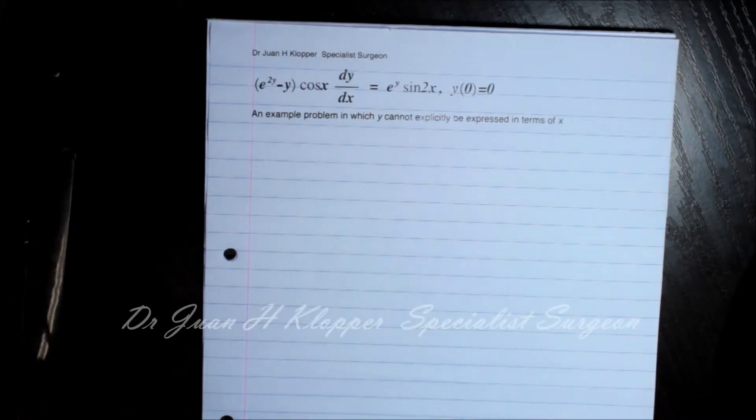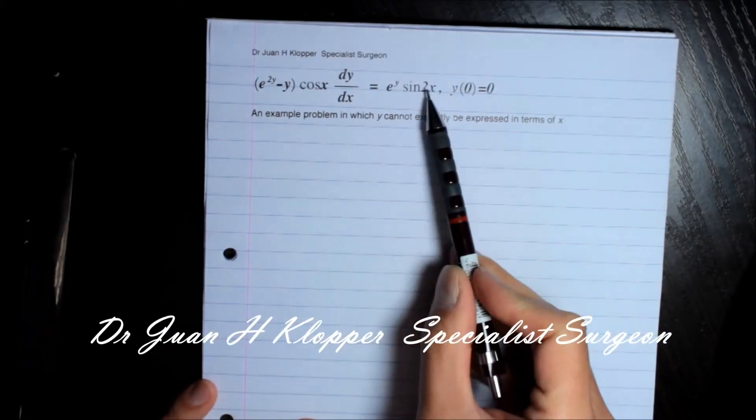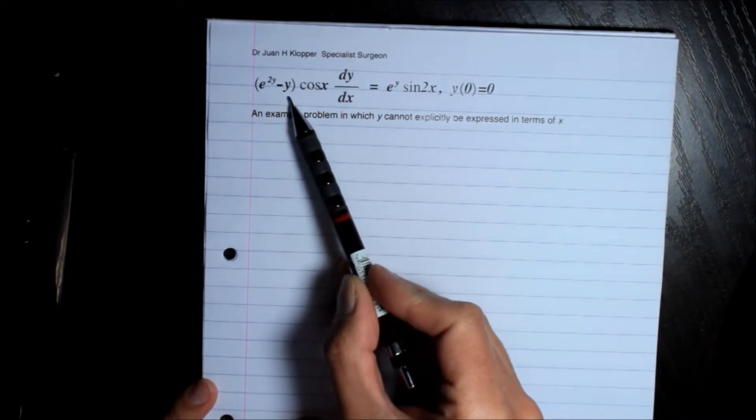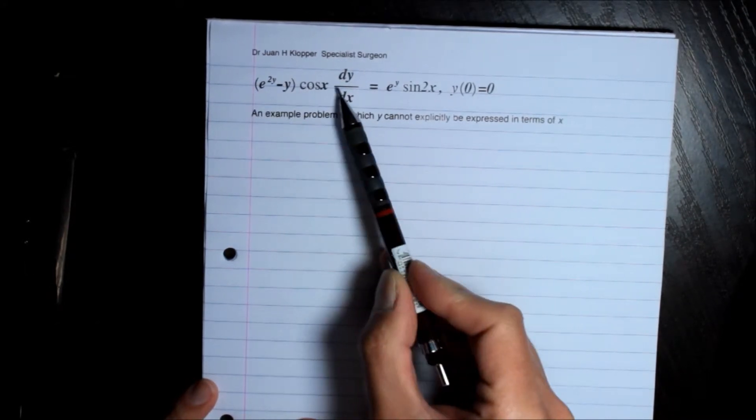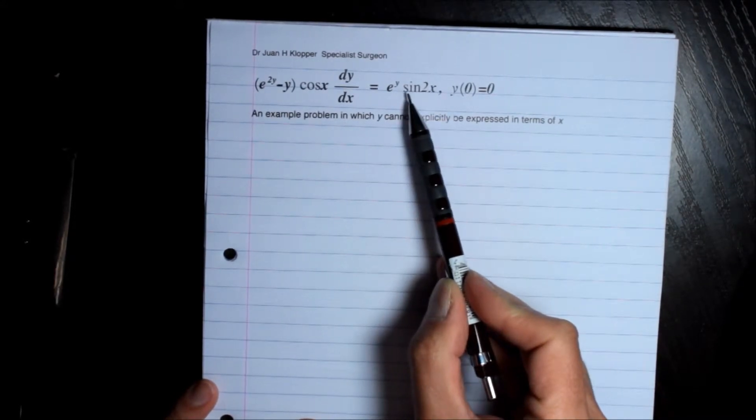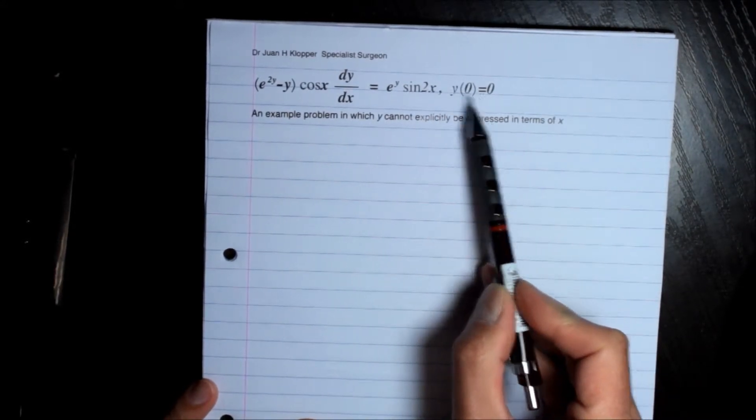Let's have a look at this problem where we can separate variables in as much as we have functions just in y and just in x. So we can certainly separate them and it's an initial value problem.